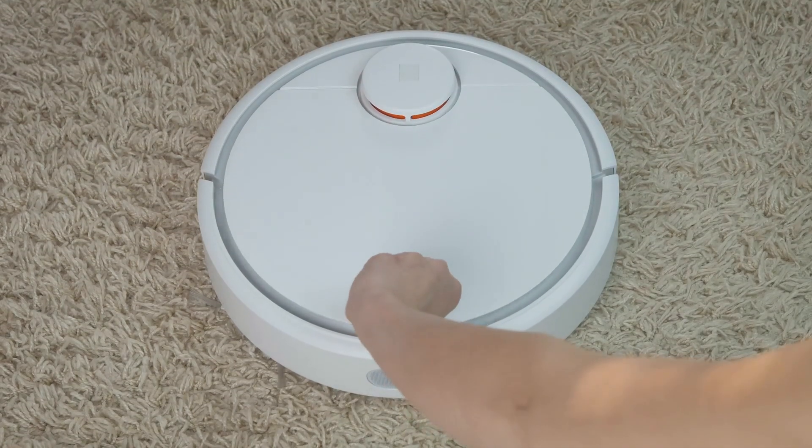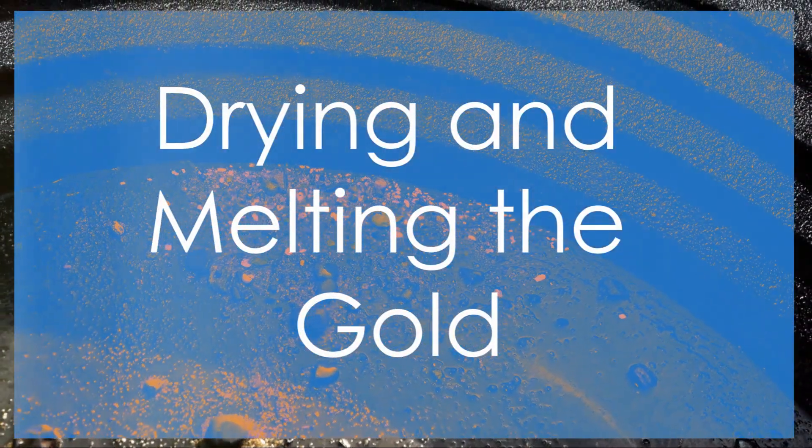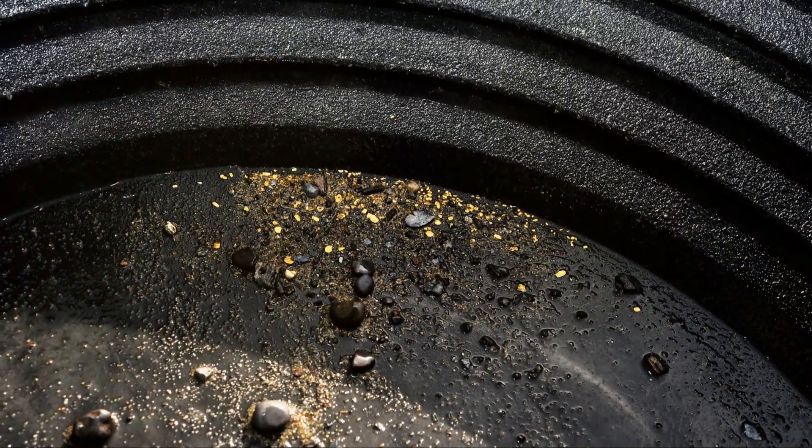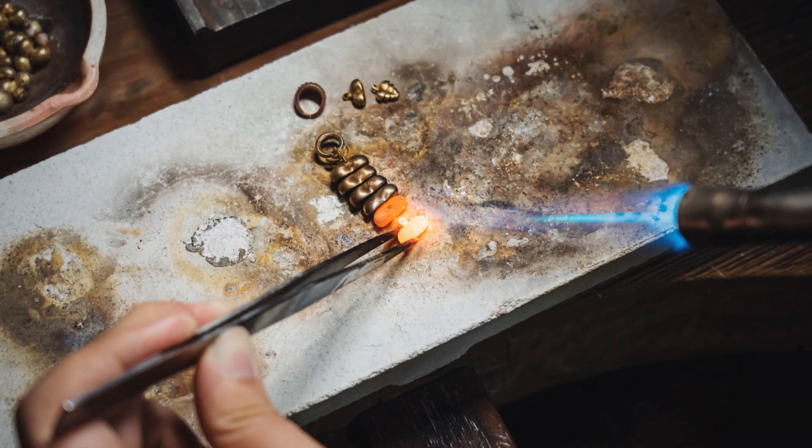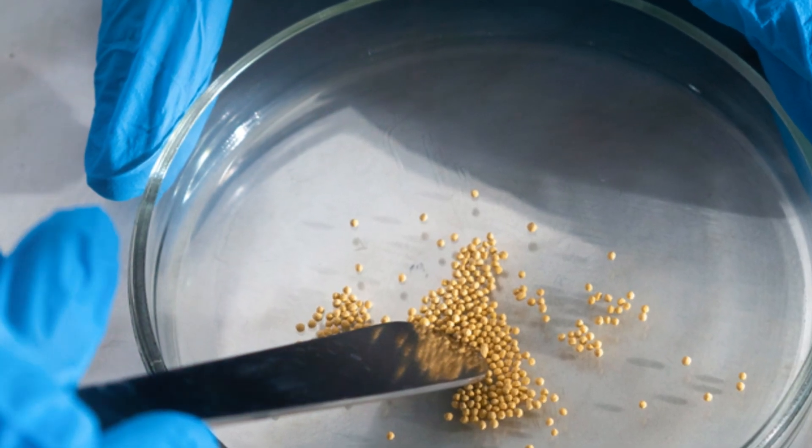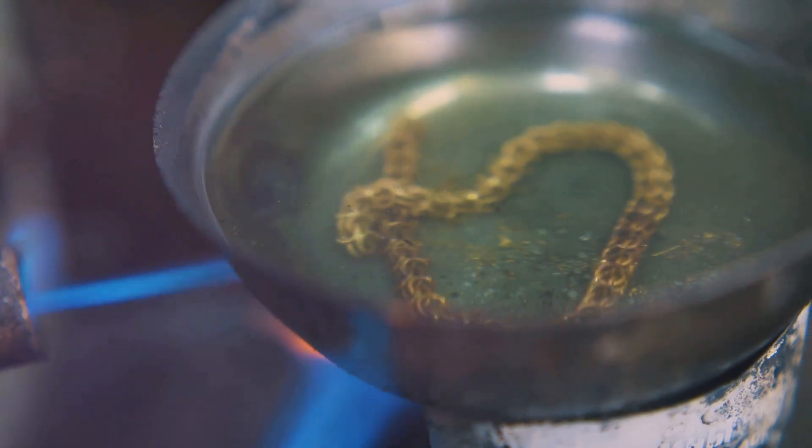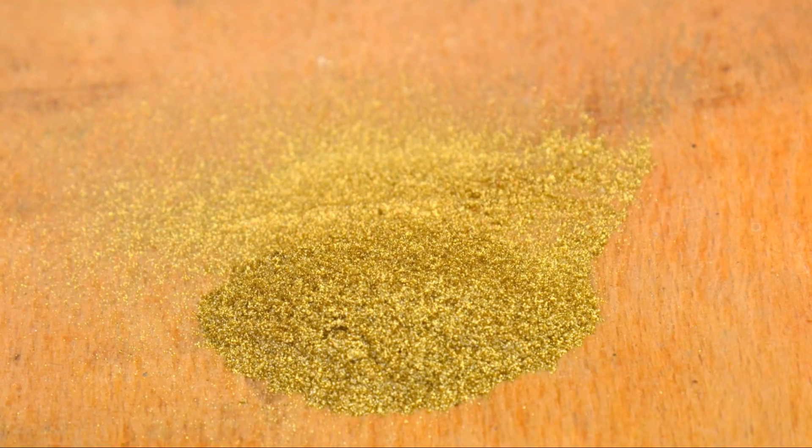We're almost there. From powder to treasure: drying and melting the gold. The moment we've all been waiting for is finally here. We're about to turn that brownish powder on our filter paper into shiny solid gold. First, we need to dry our gold powder completely. You can do this by leaving it out in a warm dry place for a few hours, or by gently heating it on a hot plate.